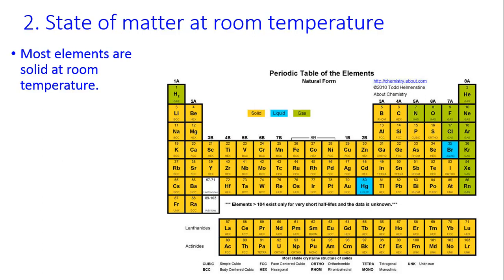Most elements are solid at room temperature. All of the metals are solid at room temperature except for mercury. Mercury is a liquid at room temperature, and mercury is used in thermometers.